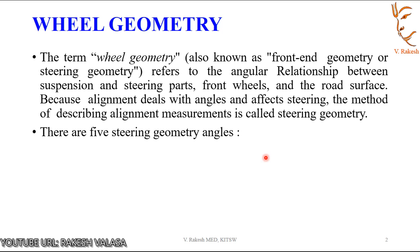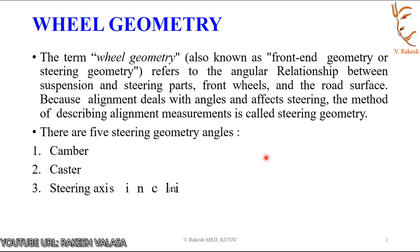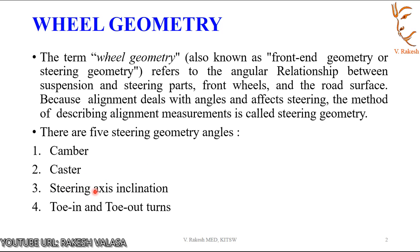The important wheel alignment factors are: 1. Camber Angle, 2. Caster Angle, 3. Steering Axle Inclination, 4. Toe In and Toe Out. Depending upon the design of the suspension system, it is possible to adjust some of these factors like Camber Angle, Caster Angle, Steering Axle Inclination, Toe In and Toe Out. Also, some of the factors are changed with the operation of the suspension.